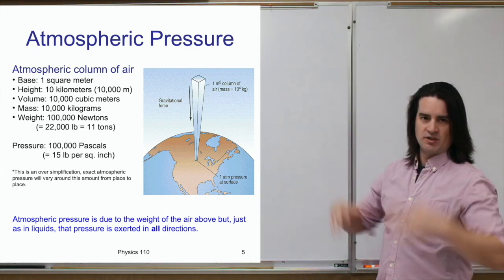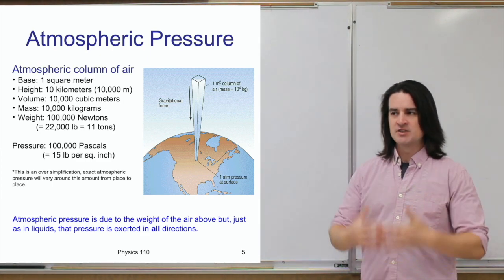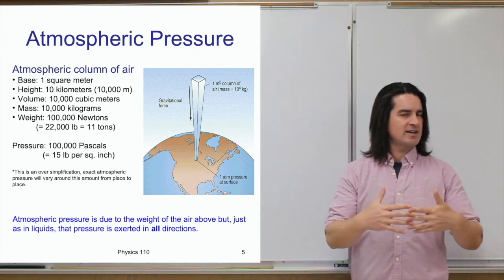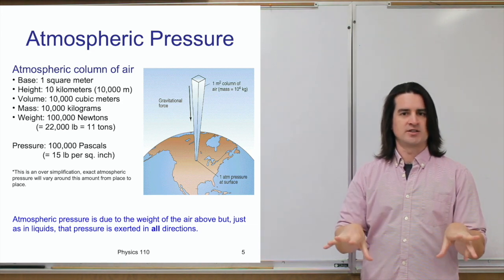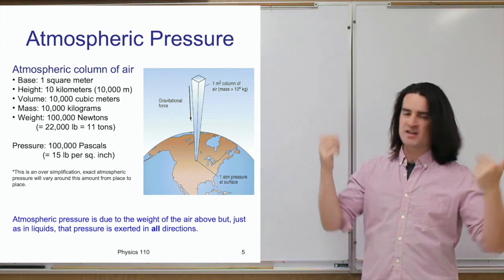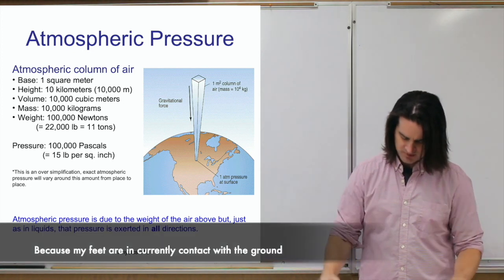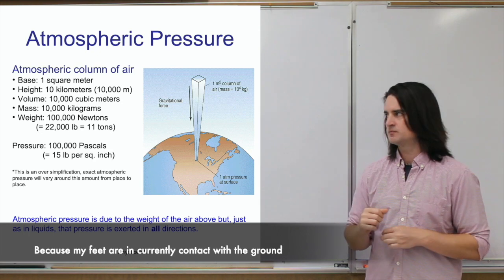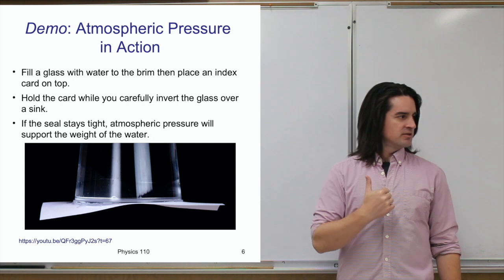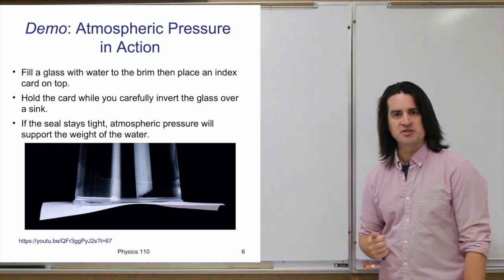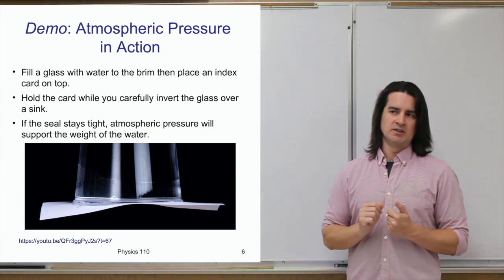That 100,000 pascals is essentially the pressure anywhere along the surface — pressure exerted on you, exerted all over your body. The pressure in a gas, just like in a liquid, because they're both fluids, exerts in all directions. So that 100,000 pascals is pressure exerting on all parts of my body right now. Now we get to some demonstrations of this atmospheric pressure.